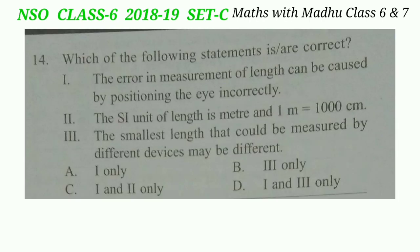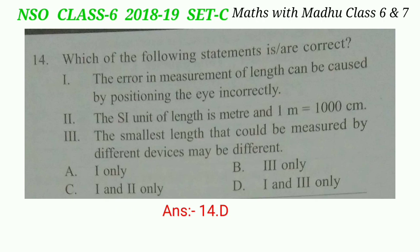Question 14: which of the following statements is or are correct? Statement 1: the error in measurement of length can be caused by positioning the eye incorrectly — this is correct. Statement 2i: the SI unit of length is meter and 1 meter equals 1000 cm — this is incorrect because 1 meter equals 100 cm. Statement 3i: the smallest length that can be measured by different devices may be different — this is correct. So the correct answer is option D: statements 1 and 3i only.